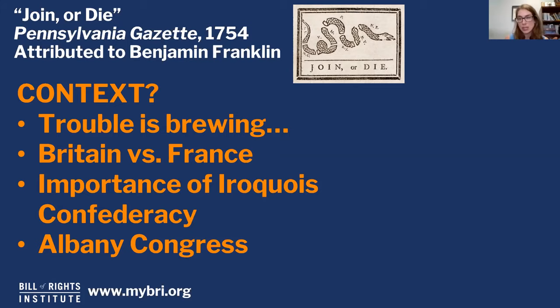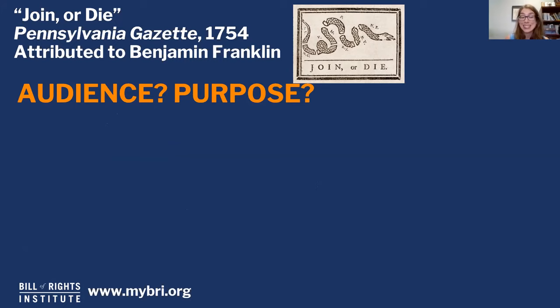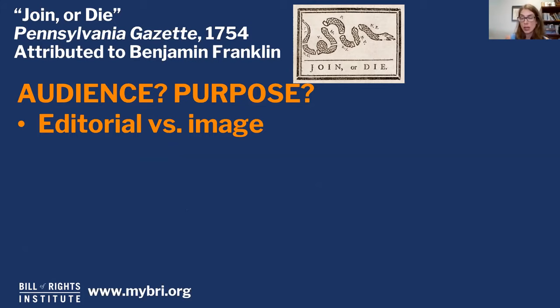We also need to think about who would actually see this. This woodcut, this image "Join or Die," appears in a newspaper. So if you're getting a newspaper in 1754, you can read, and you're going to read Franklin's editorial. But if you can't read, or if you have a very low reading level, you could still probably look at this image and get the main points: we need to come together for something, or bad things are going to happen — mainly, we'll die. So he's covered both bases: he has a longer editorial, and he has this image.